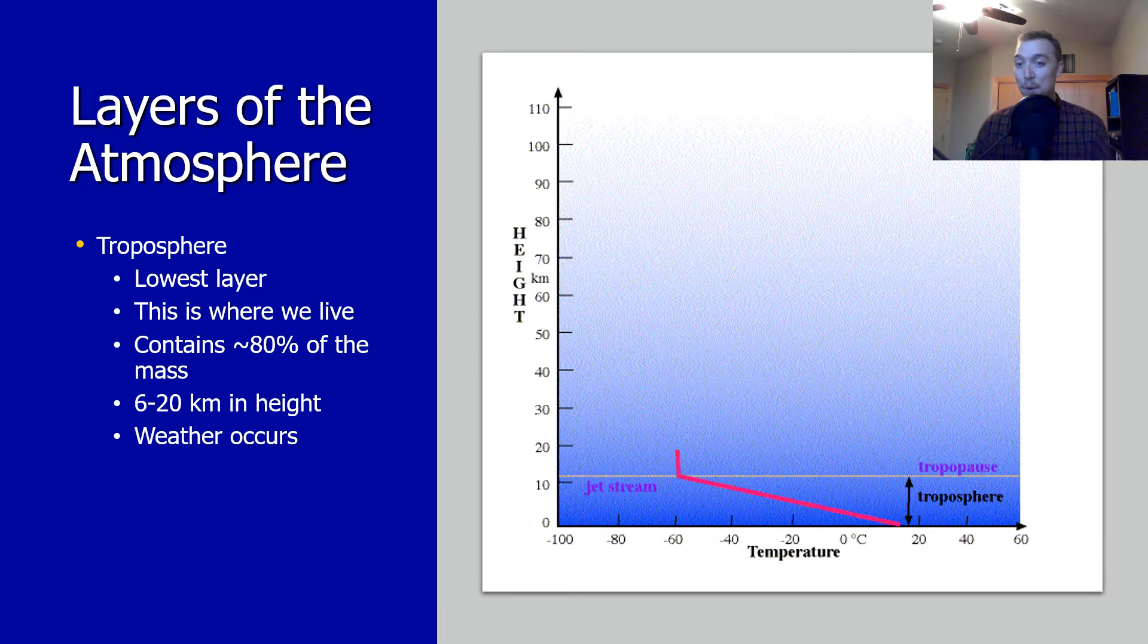Let's start off with the troposphere. This is the one most important to us because it's where we live. It's the lowest layer in the atmosphere, containing 80% of the mass of the atmosphere. The troposphere begins at Earth's surface and extends roughly 6 to 20 kilometers high. This is also where all the weather occurs. Together with the tropopause, that's what we call the lower atmosphere.